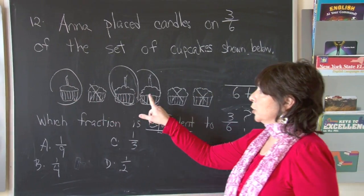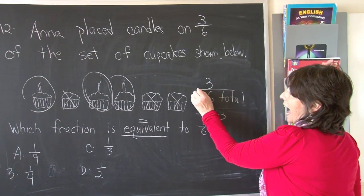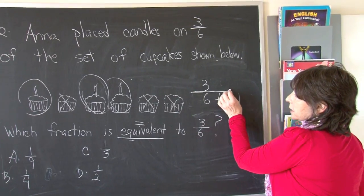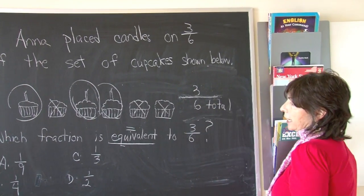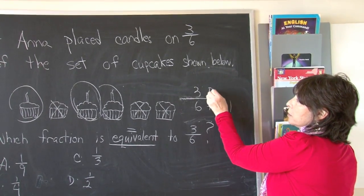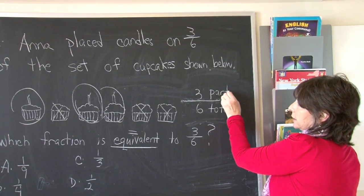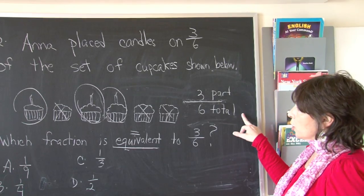Let's see how many had candles. One, two, three. Three out of. I always say that this line means out of. Three out of six had candles. This is the part. Part of the cupcakes had candles. Part. Total.